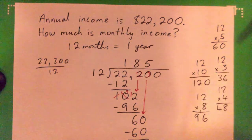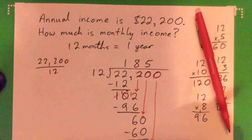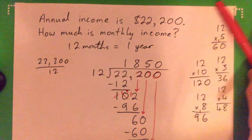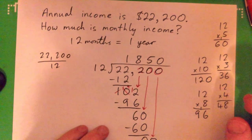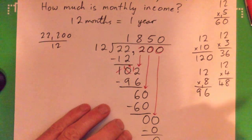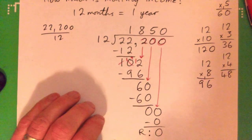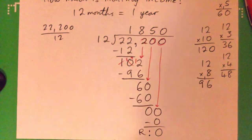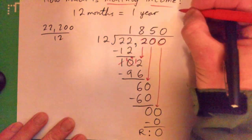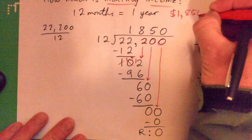We would take this 0 down, and now 12 into 0 goes 0 times. And if you really want to keep going, you can do 0 times 12 is 0, then subtract, and the remainder is 0. Good, so the answer is the monthly income would be 1,850. Good job.